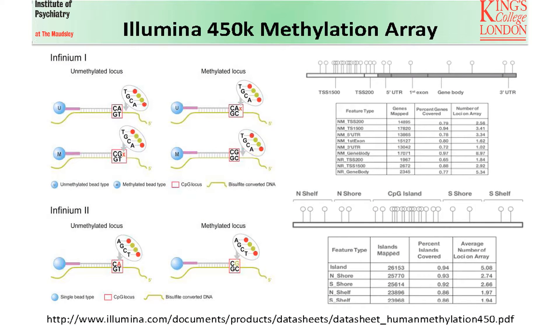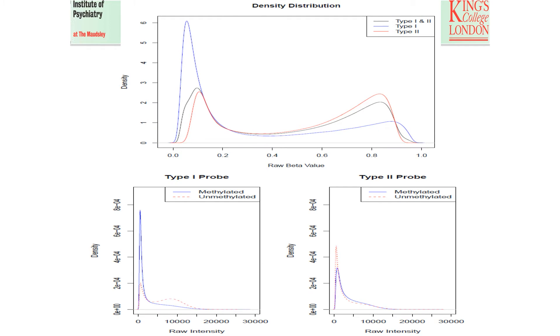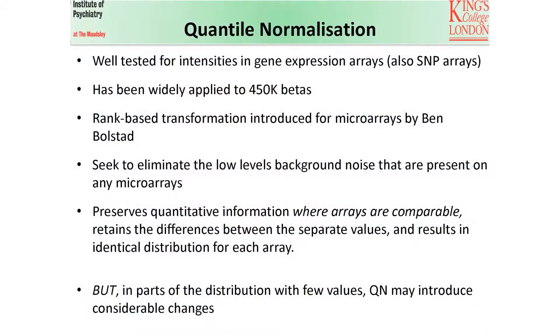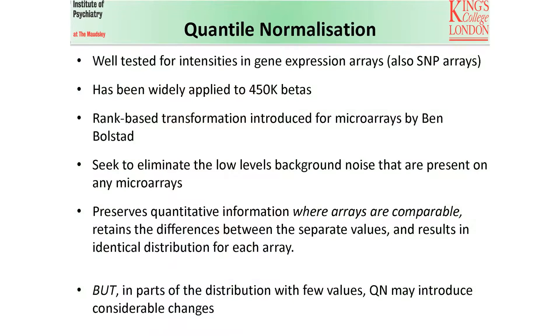As you heard from Christoph already, the 450K array is a very useful addition to the available methods for DNA methylation. But its complex design, which incorporates two different types of probes with quite a different distribution, means that we need to take quite a lot of careful consideration when it comes to data normalisation and analysis. A good standard way to correct for background effect for expression arrays is quantile normalisation, which has been well tested for gene expression arrays and SNP arrays, and has also been widely applied to 450K betas. Quantile normalisation is a rank-based transformation method which seeks to eliminate the low-level background noise present on any microarrays.